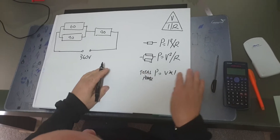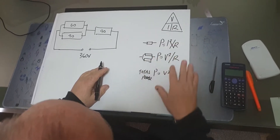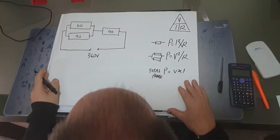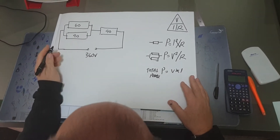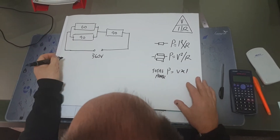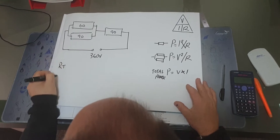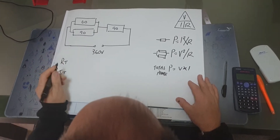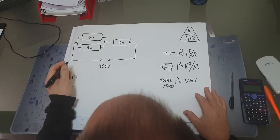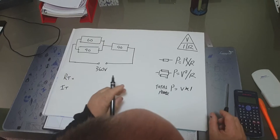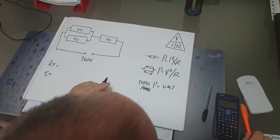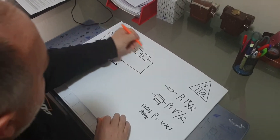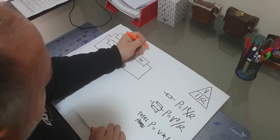I've drawn this up here and I'll go through the working out. The first two things I always find are resistance total and current total. They're always going to ask you to find three things in the exam.